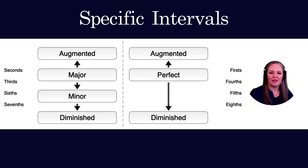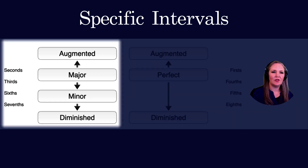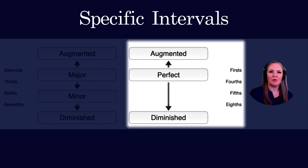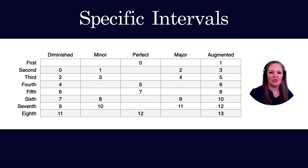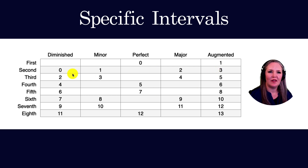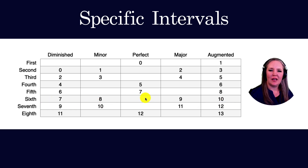This chart shows the relationship among the different interval qualities. Seconds, thirds, sixths, and sevenths can be augmented, major, minor, or diminished. Firsts, fourths, fifths, and eighths can be augmented, perfect, or diminished. The chart also shows the number of half steps each specific interval contains — for example, a sixth can be diminished, minor with eight half steps, major with nine, or augmented with ten half steps. Sixths don't have a perfect quality, only major.